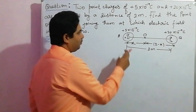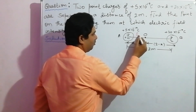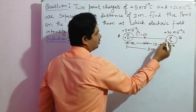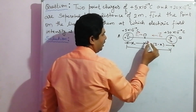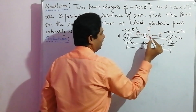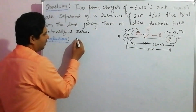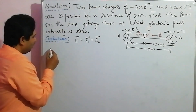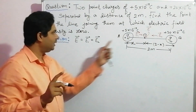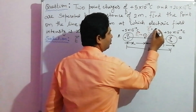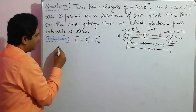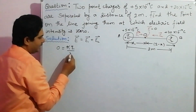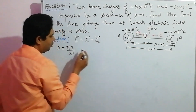Now let us see the electric field. Q1 is a positive charge, so electric field E1 moves in this direction. Q2 is also a positive charge, so electric field E2 moves in the opposite direction. The resultant electric field at point O is E. According to the principle of superposition, E equals E1 plus E2. At point O, E equals zero. So we write: zero equals KQ1 divided by X squared in the AO cap direction, plus KQ2 divided by (2 minus X) squared in the BO cap direction.